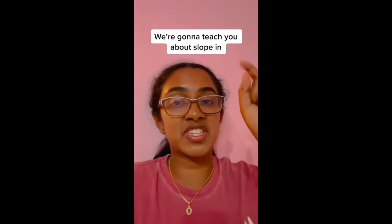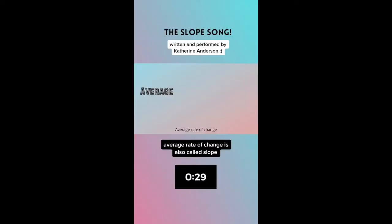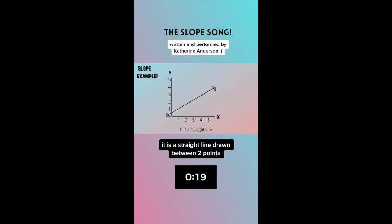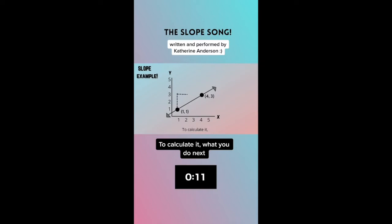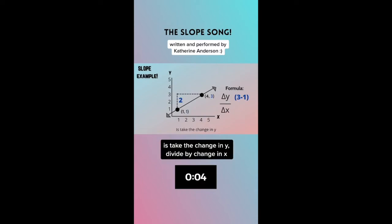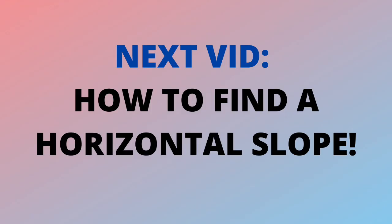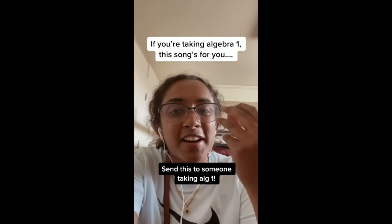We're going to be teaching you about slope in 30 seconds. Every rate of change is also called slope. It is a straight line drawn between two points. To calculate it, take the change in y divided by the change in x.